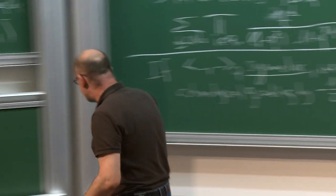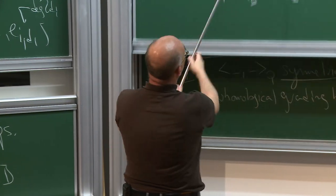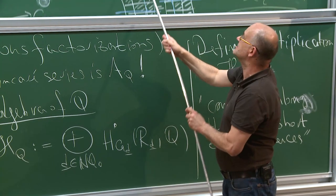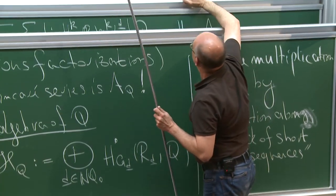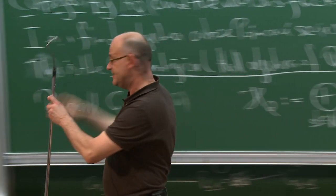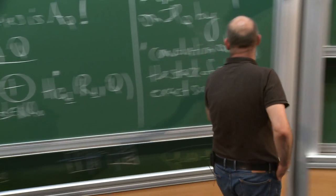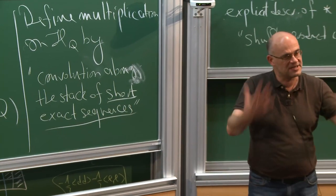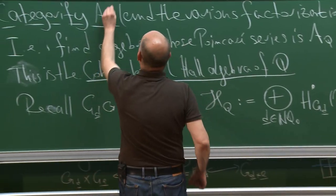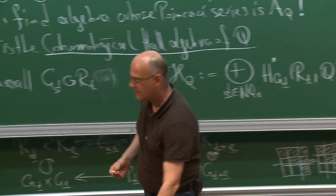We accomplished the first thing for today: we categorified A(Q), realized it as the Poincaré series of an algebra naturally associated to the quiver. It reflects the geometry of the variety of representations and reflects the category behind the quivers — we involve all short exact sequences in the multiplication, so the whole category structure is reflected. Now the question is: what are the categorifications of these various factorization identities?